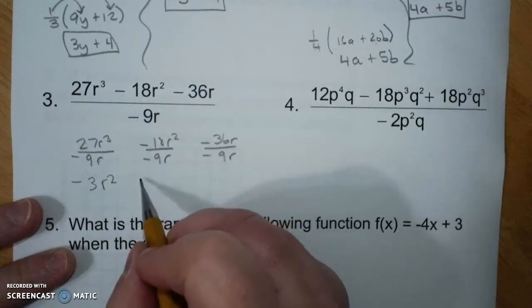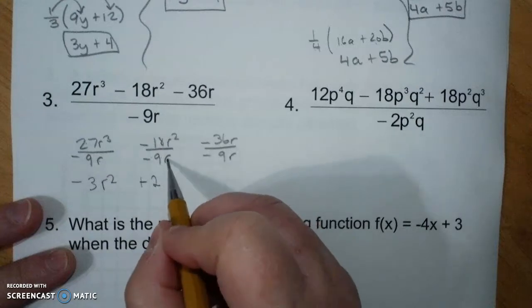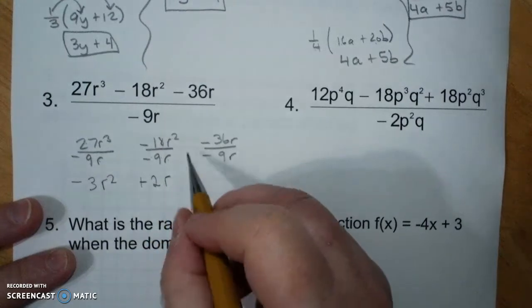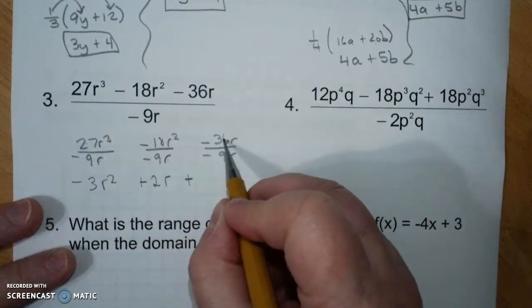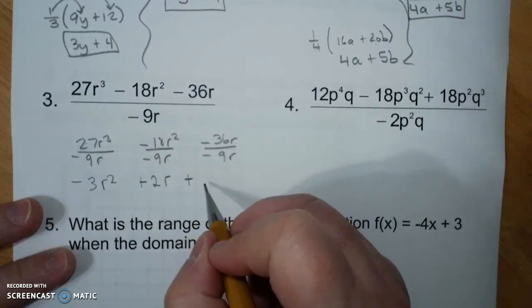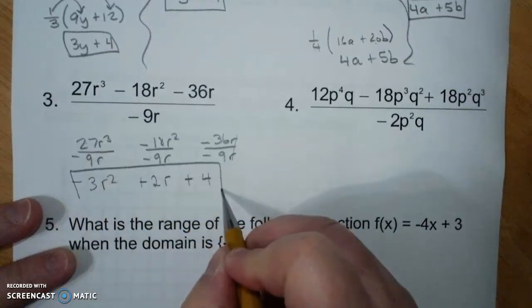Negative divided by a negative is a positive. 18 divided by 9 is 2. Two up there, one down there, 1 stays in the numerator. Negative divided by a negative is a positive. 36 divided by 9 is 4. And the r's factor out. There's your answer.